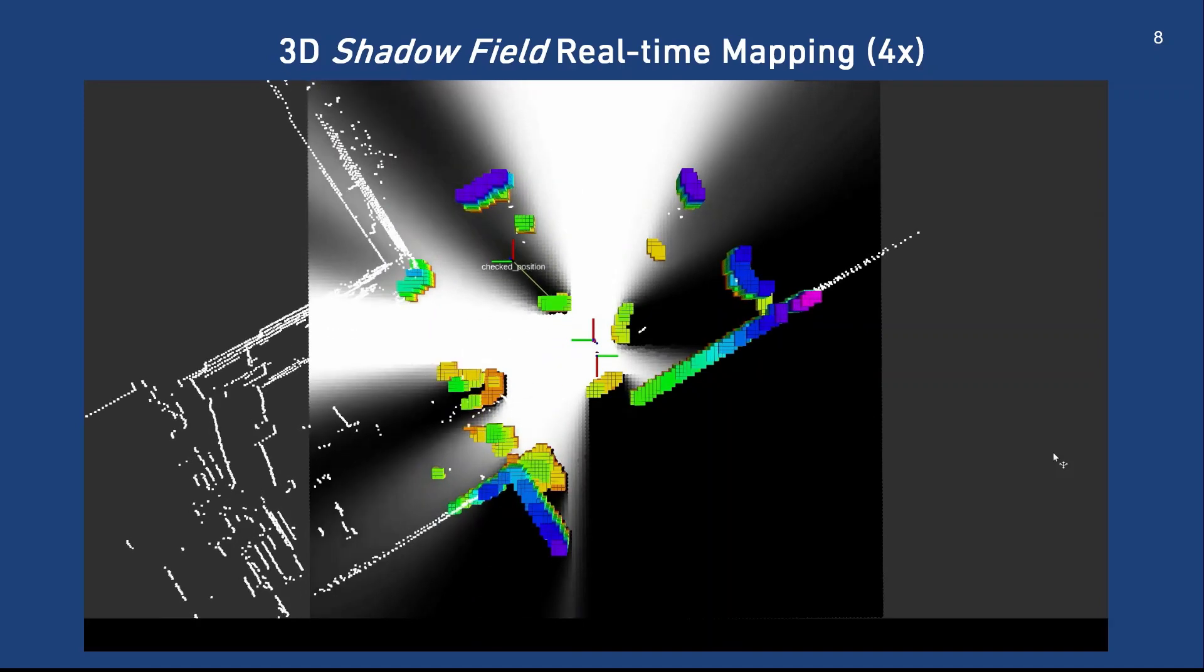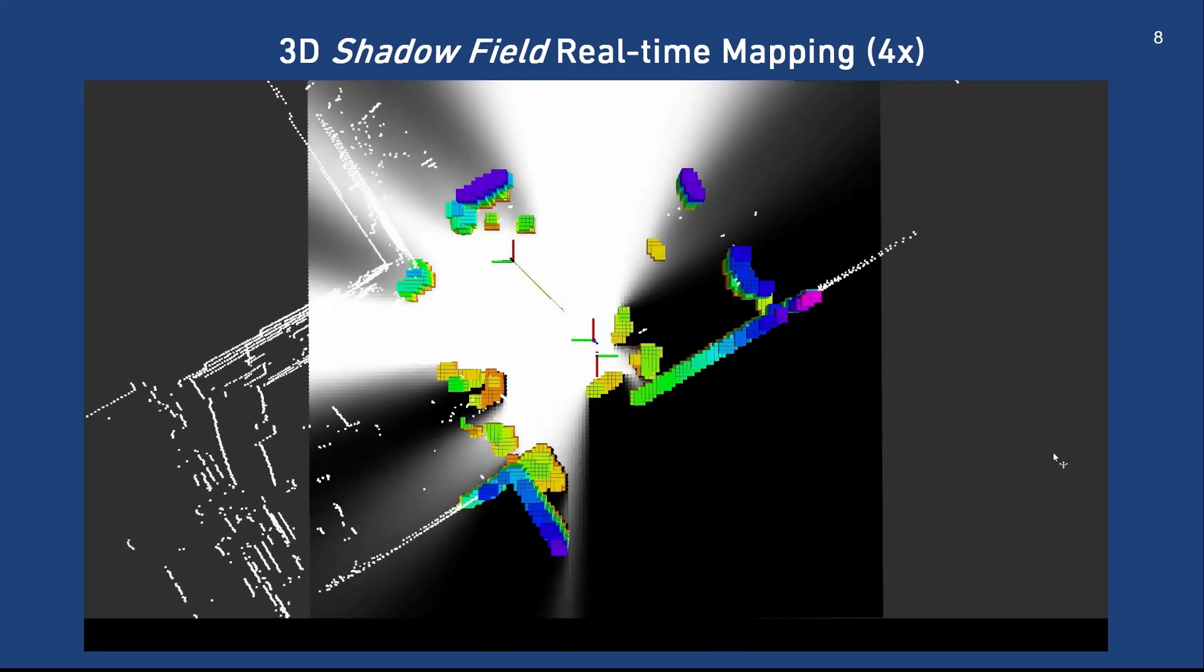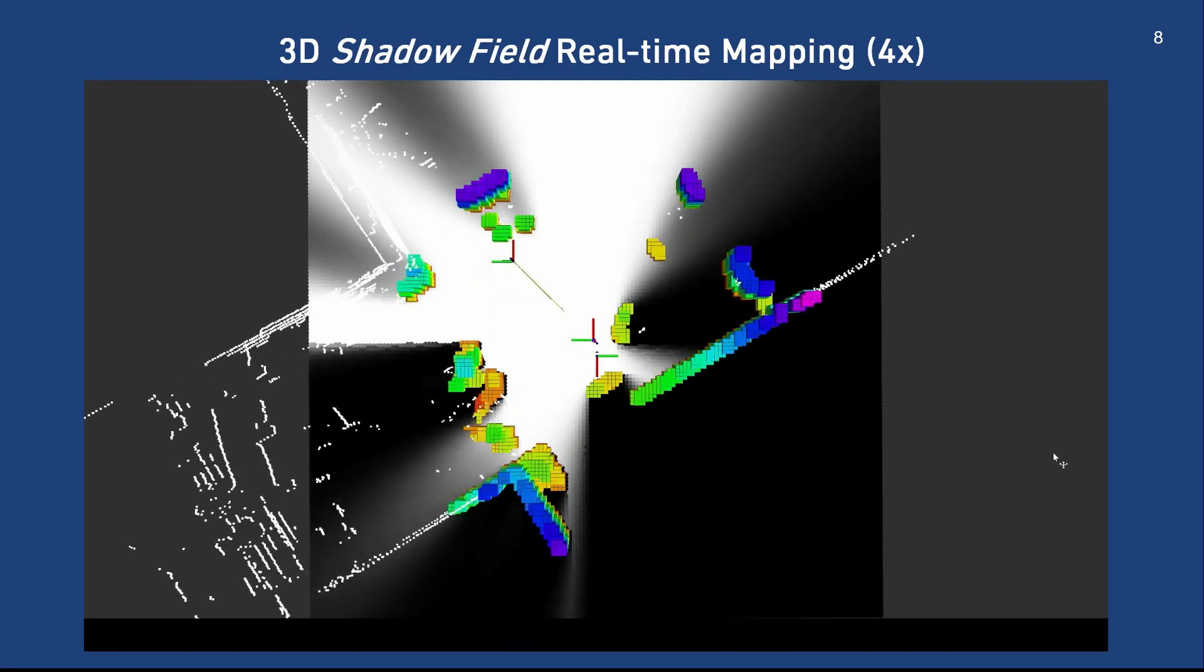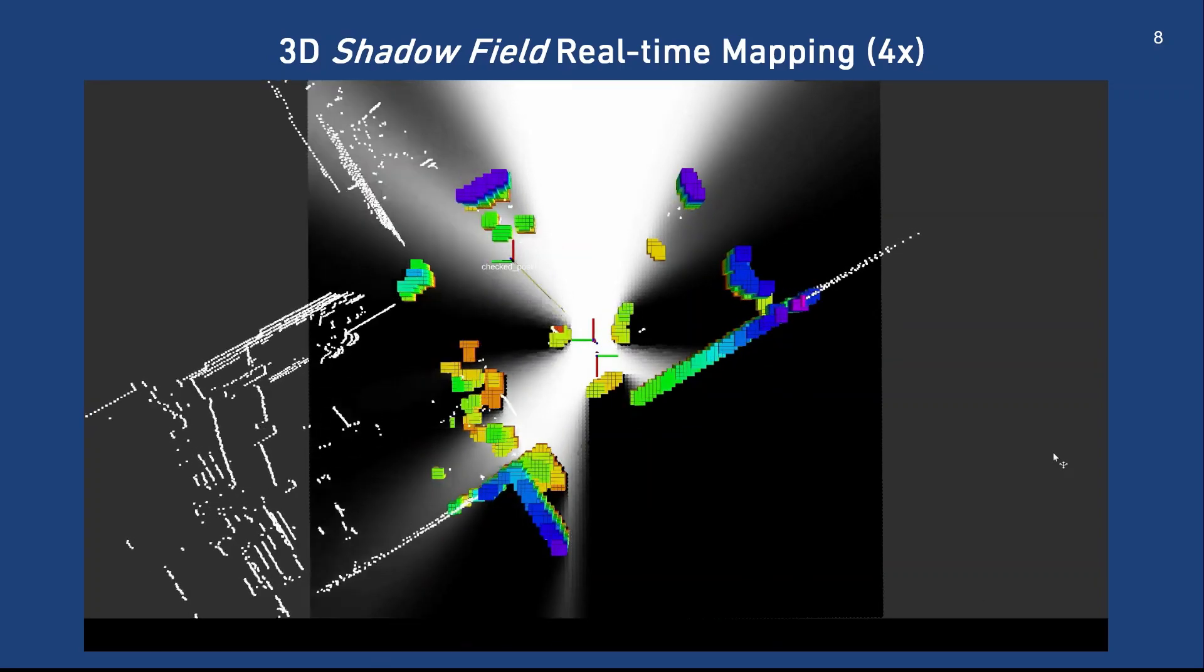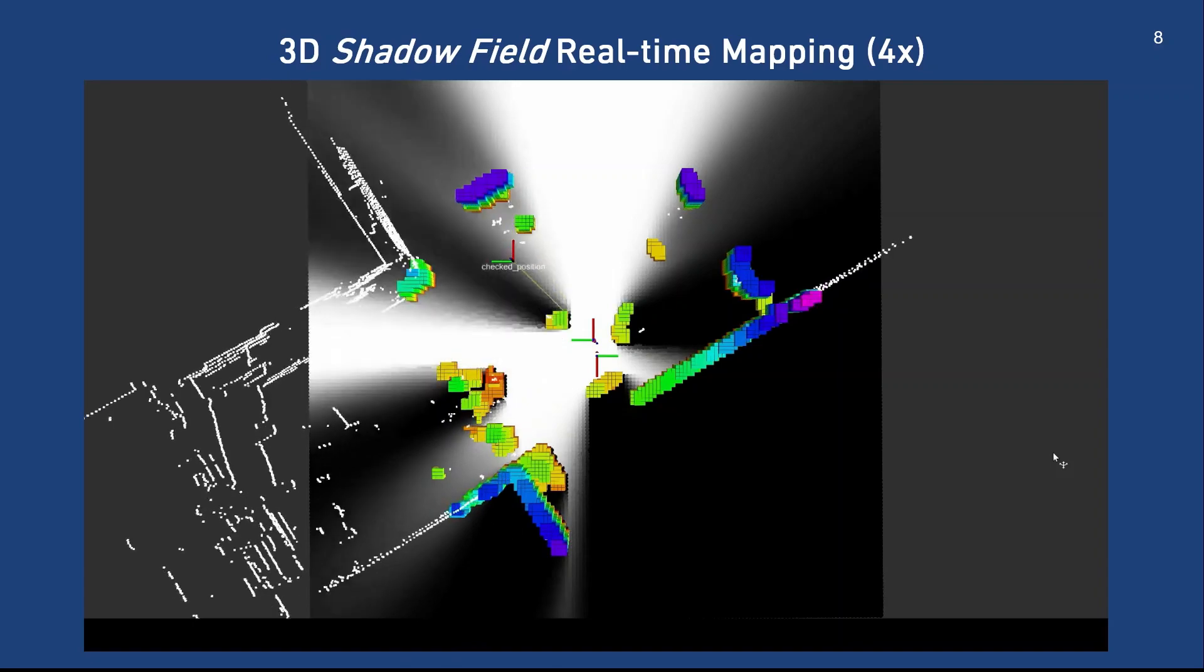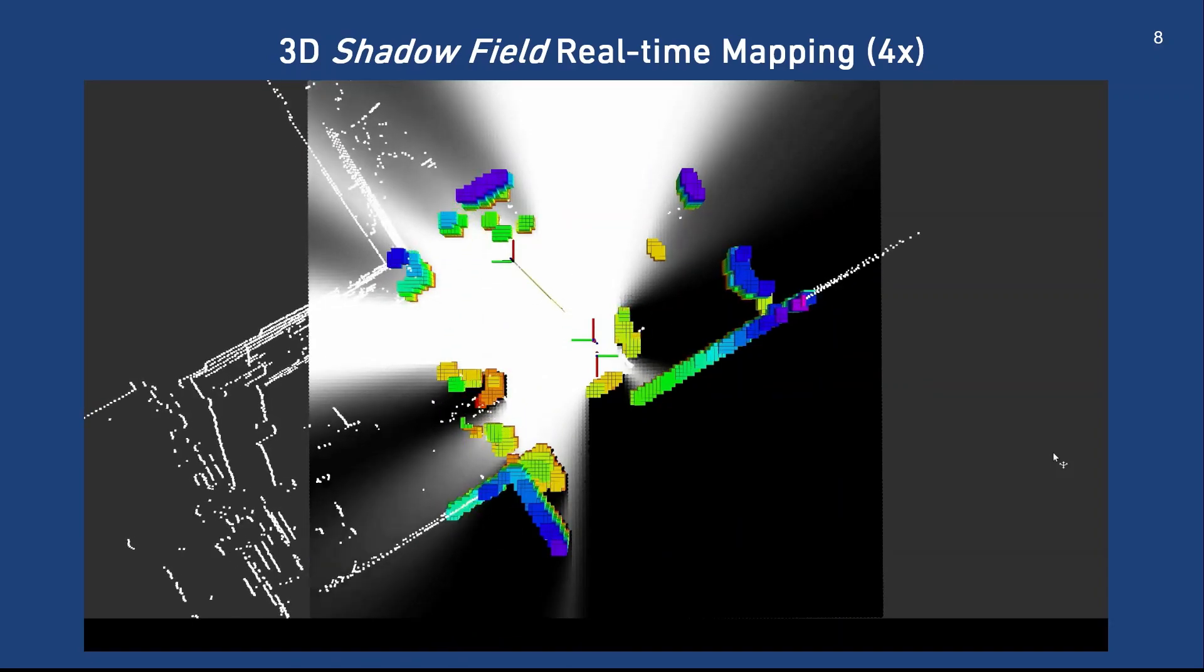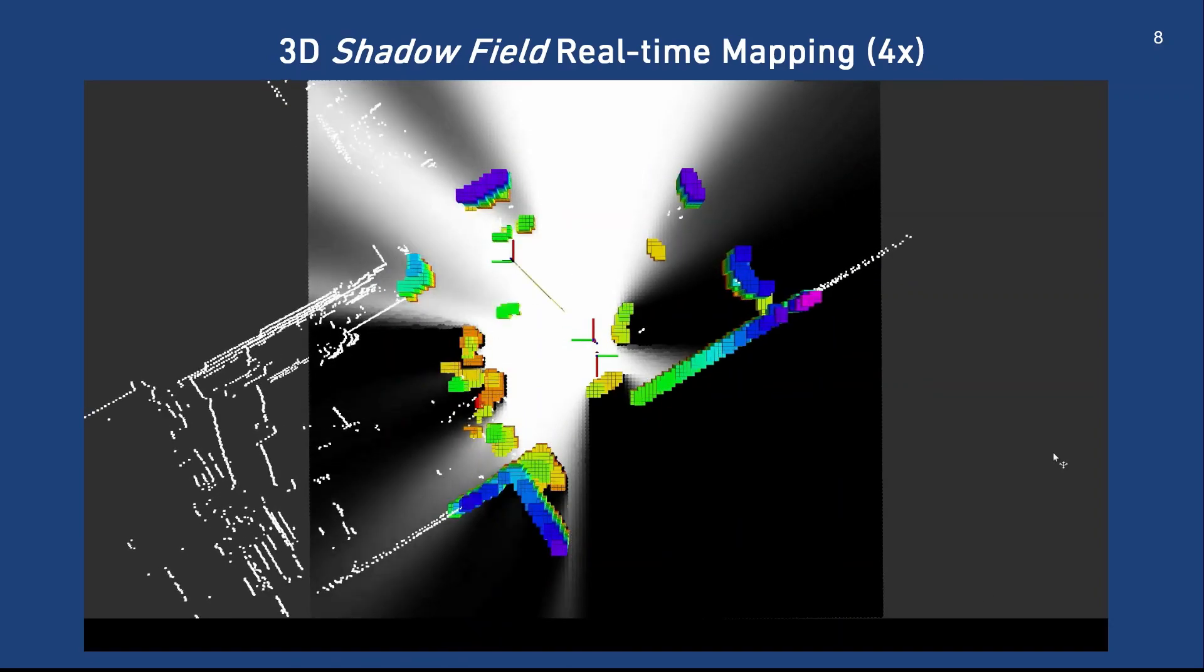In a top view, we show the light source at the center, the occupied voxels in color scale, the shadow field slice in grayscale, and the Velodyne sensory data in white dots. The occupied voxels exhibit shadows with umbras as pitch dark and penumbras as the shades of gray.